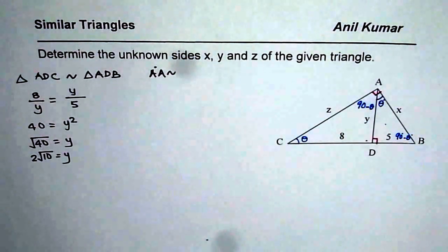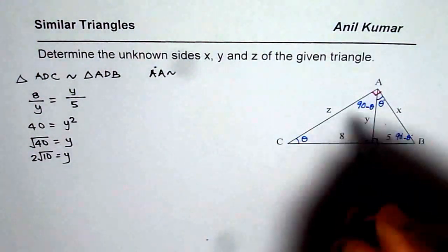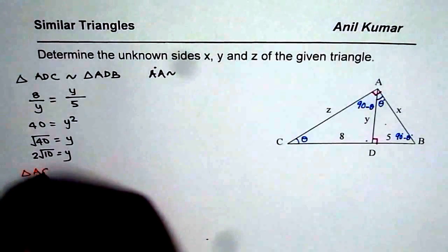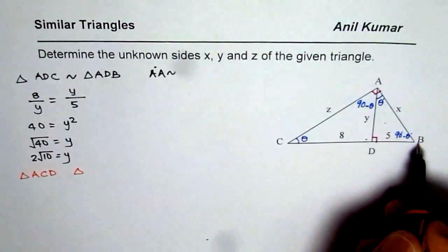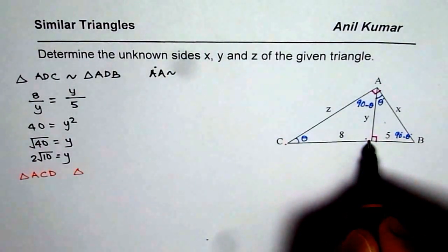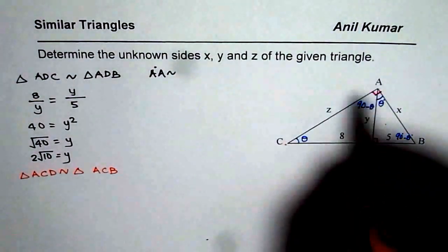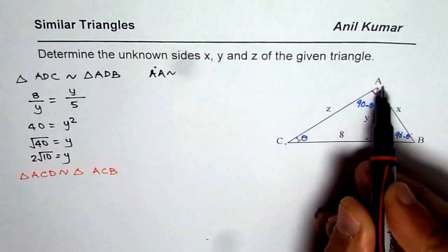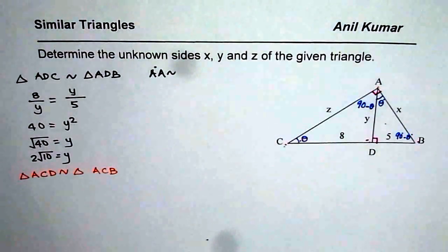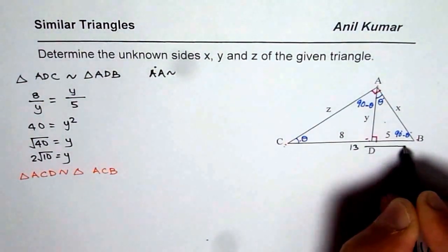We can take another set of triangles and again use this property and solve it. This time, let us take triangle ACD and then the big triangle ACB. These two triangles are also similar since ACD has one right angle and one theta, and ACB — the big triangle — also has a right angle and theta. Since they are similar, their ratios of sides should be constant. Note that 8 plus 5 gives CB equals 13.